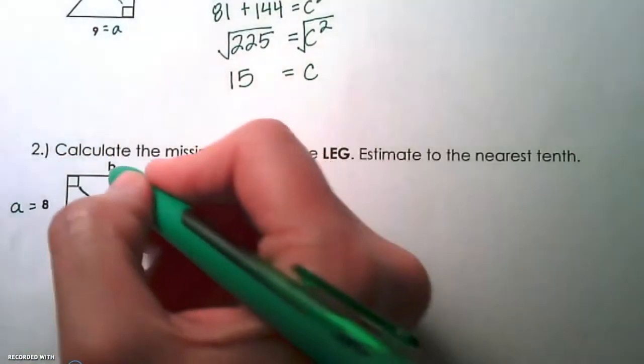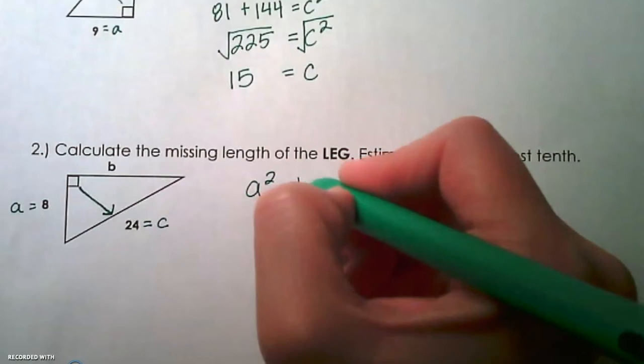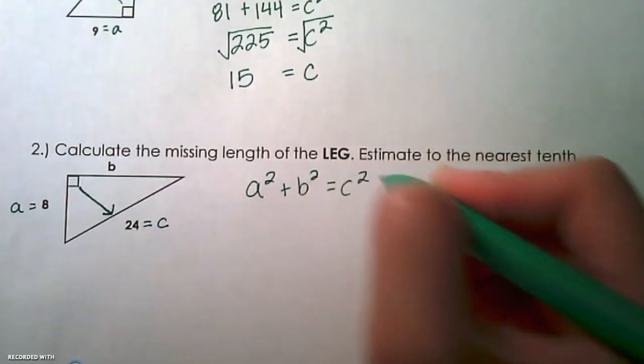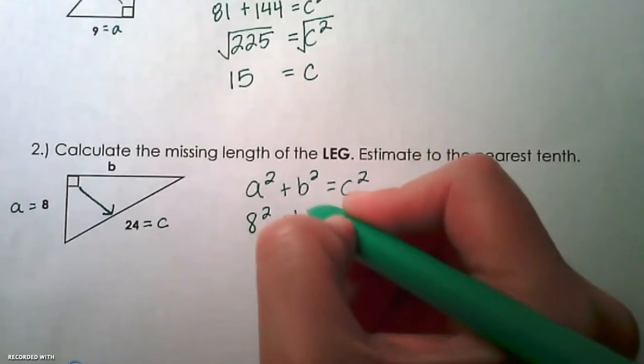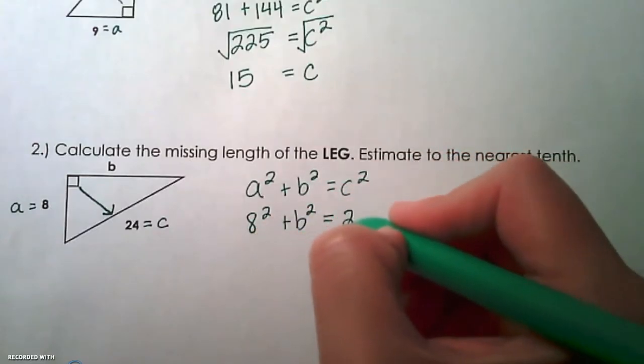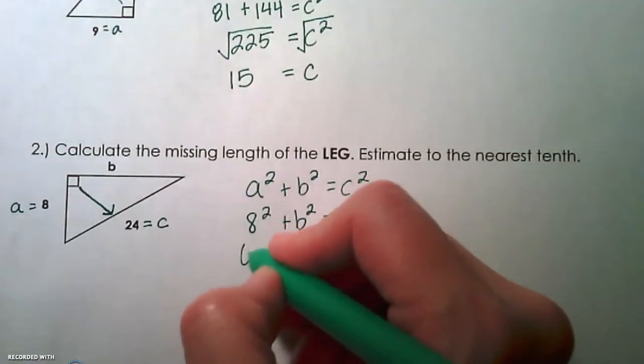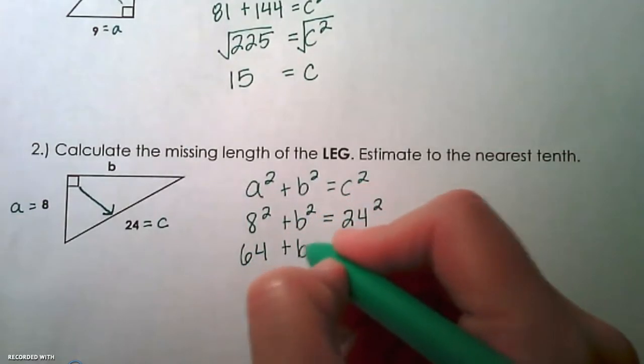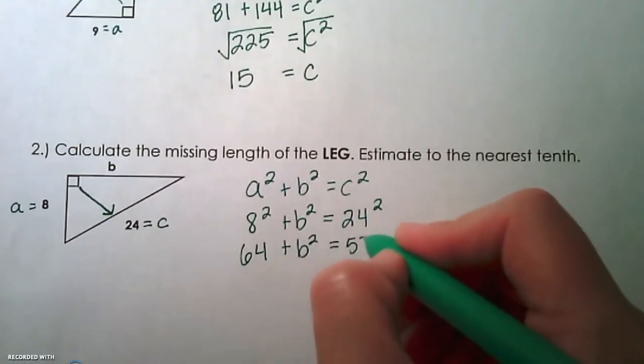8 can be subbed in for a, and we can solve for b. So let's write our formula, a squared plus b squared equals c squared. a is going to be 8 squared. We don't know what b is, so we're going to leave b squared there, and then 24 squared. Let's go ahead and square the numbers we know. So 8 squared is 64, plus we don't know b squared, then 24 squared is 576.